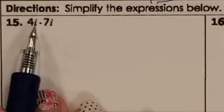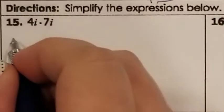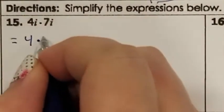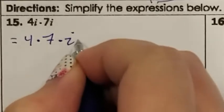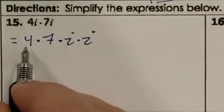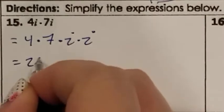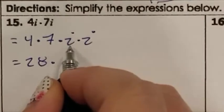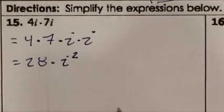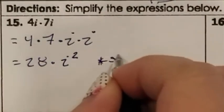Problem number 15: 4i times 7i. You do the numbers times the numbers and the i's times the i's. So 4 times 7 is 28. i times i is an i squared.